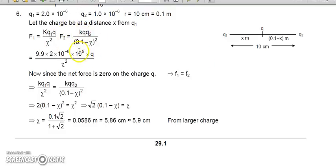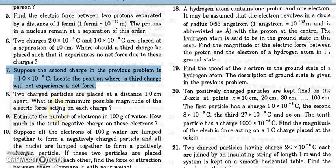The distance from the other charge is 0.1 minus x, since 0.1 meter equals 10 centimeters. We equate the two forces: F1 by charge 1 on charge q and F2 by charge 2 on q. By equating these forces we can find the value of x.